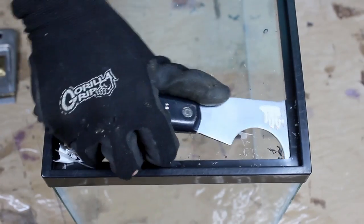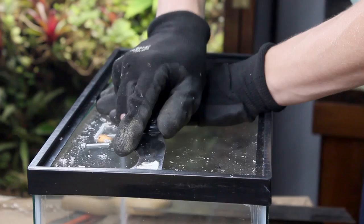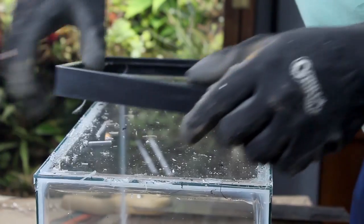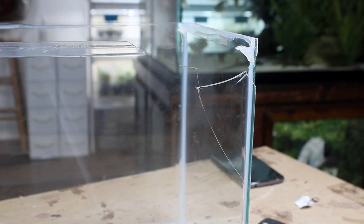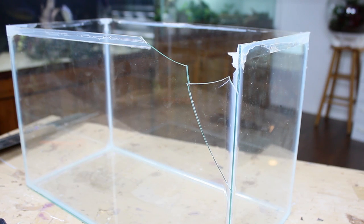A similar process was done to the bottom trim but I also used a paint scraper. Here's a better look at the number I did to the front pane of glass. As I'm sure you could imagine we can't use a tank like this so let's fix it.